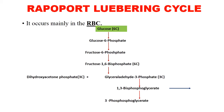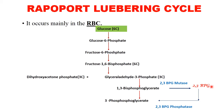Instead of being directly converted to 3-phosphoglycerate, 1,3-bisphosphoglycerate may get converted to 2,3-bisphosphoglycerate. For this first step, the enzyme is 2,3-bisphosphoglycerate mutase. It involves a shifting of the phosphate group from position 1 to position 2, a type of isomerization.